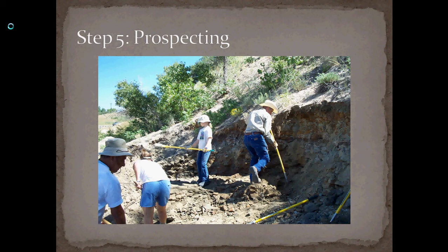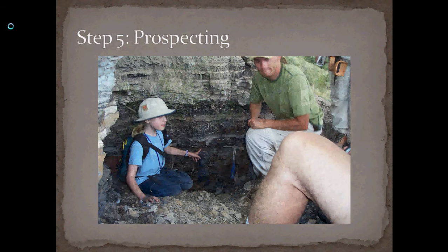Here is an example of a leaf site — you can see they're taking pickaxes, carving into the hill, and then using a shovel to clean up the material that's falling around. This is another site where we were actually not looking for fossils but for the Cretaceous-Tertiary boundary. The little girl in the trench has her finger directly on the KT boundary, which is the horizon marking the extinction of the dinosaurs.